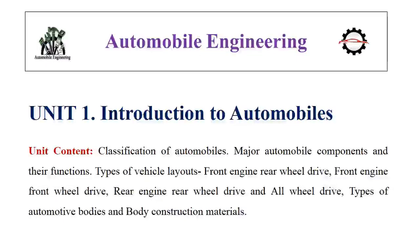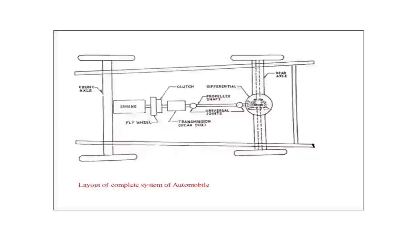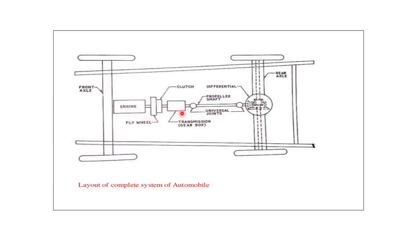In this layout table, the different vertical components are shown: the engine, flywheel, clutch, gearbox, propeller shaft, universal joints, differential, axle, wheels, and chassis frame. These are the different components of the automobile shown in this layout. From an examination point of view, you may be asked to draw the diagram of the layout of an automobile, so you can draw this simple layout showing the important components.